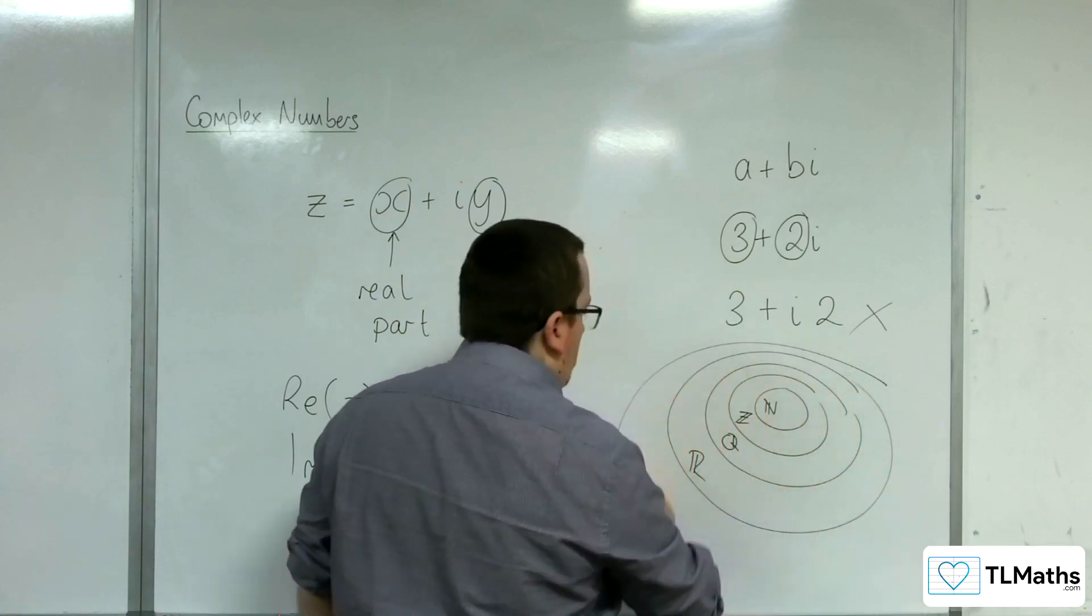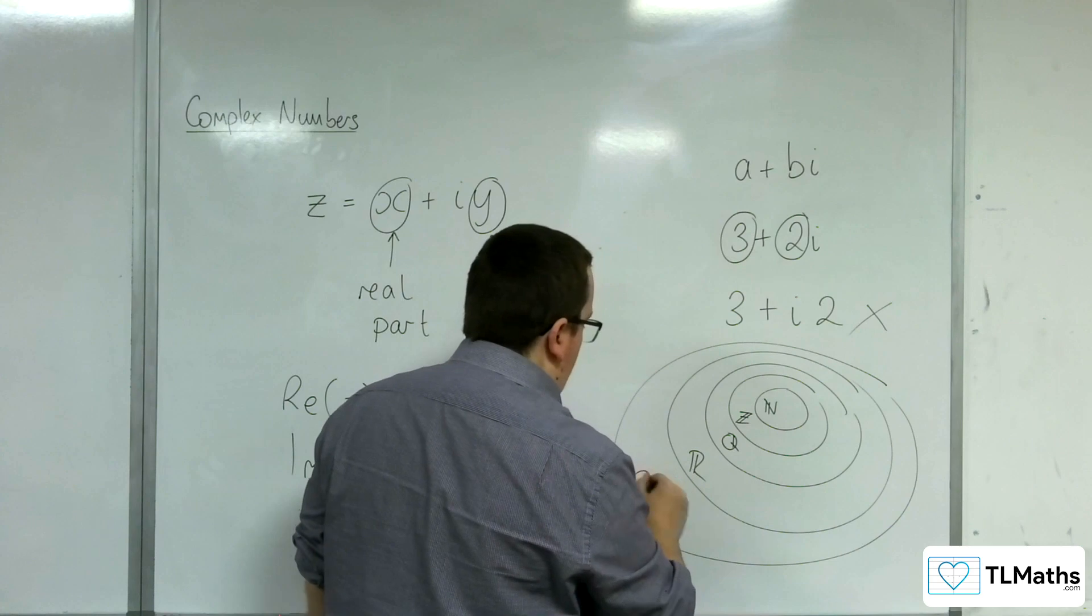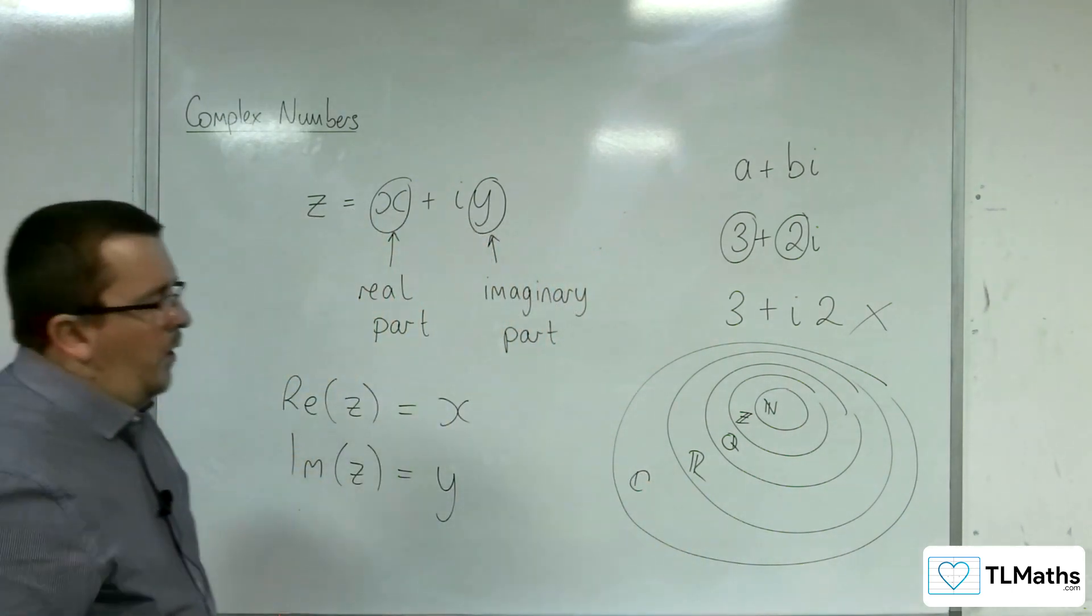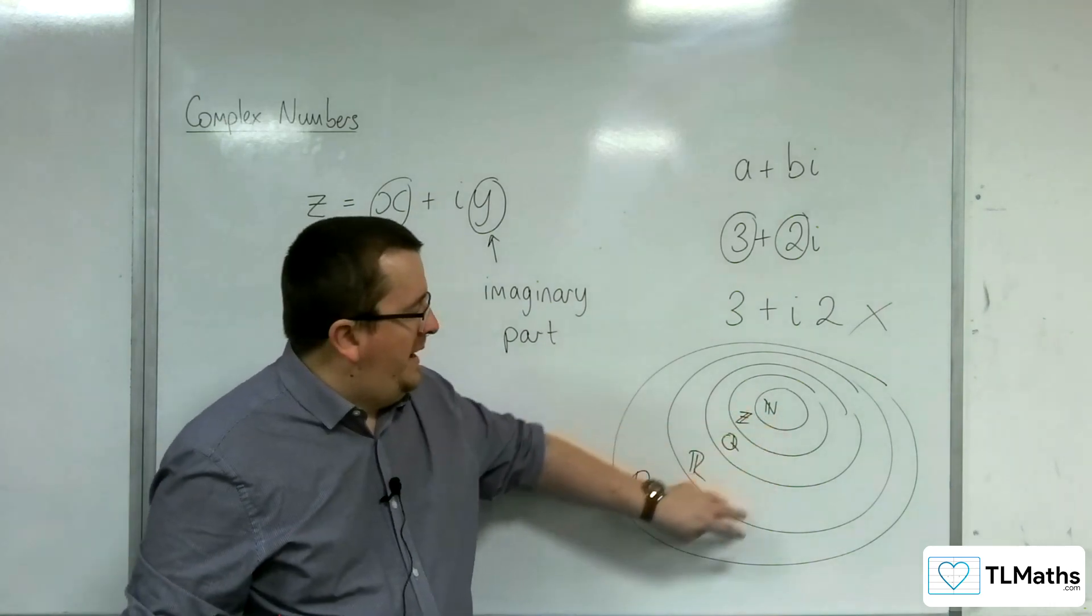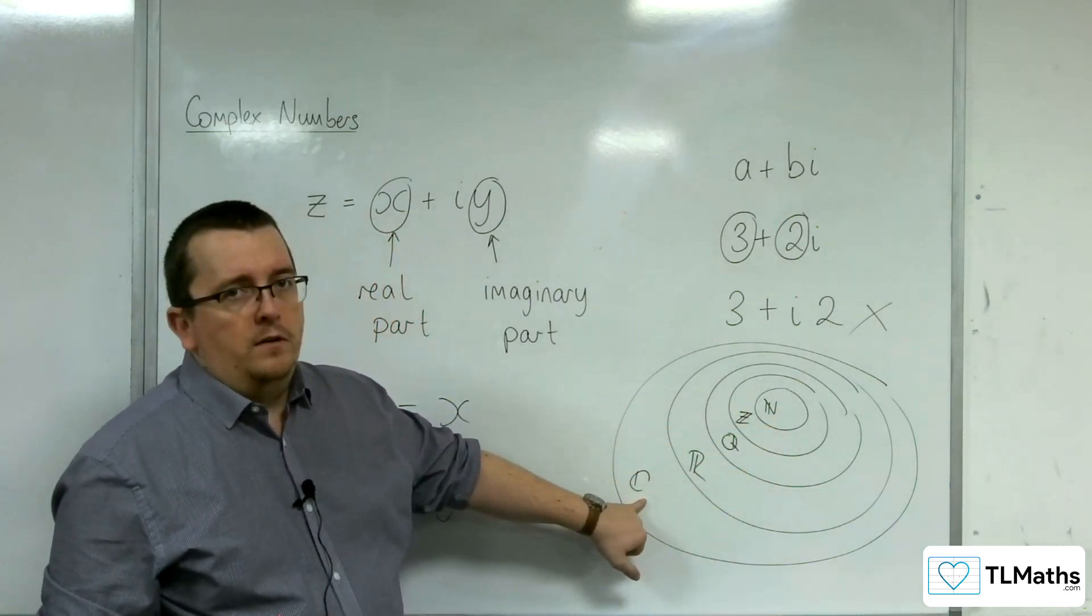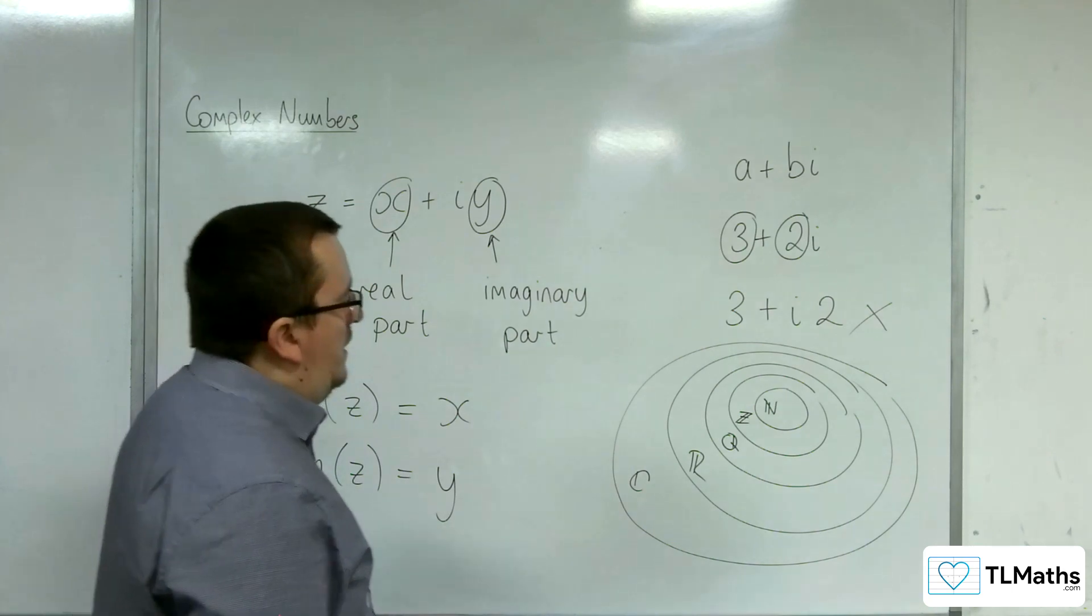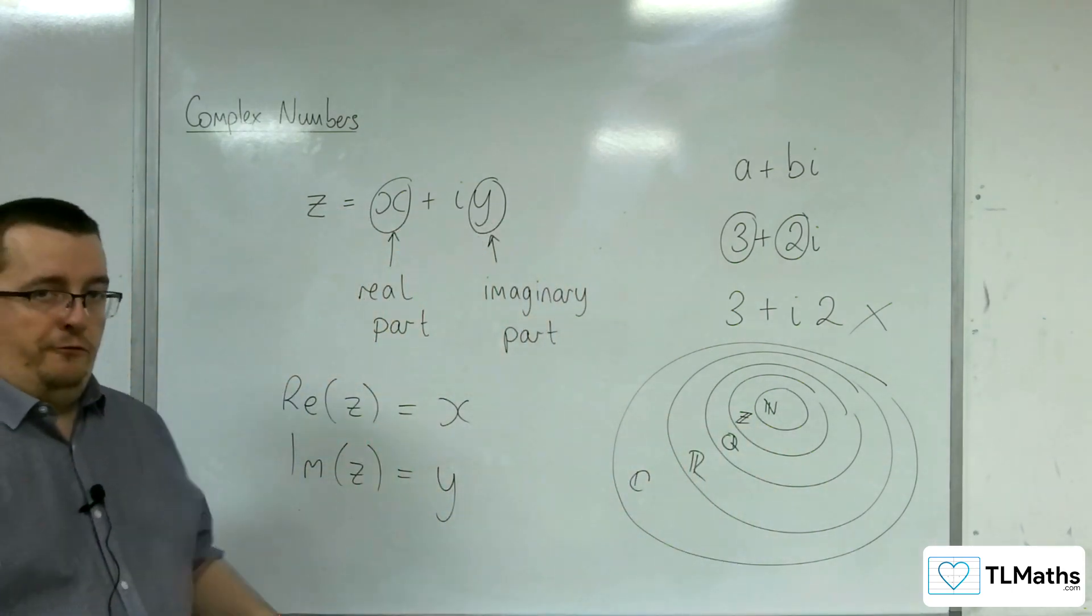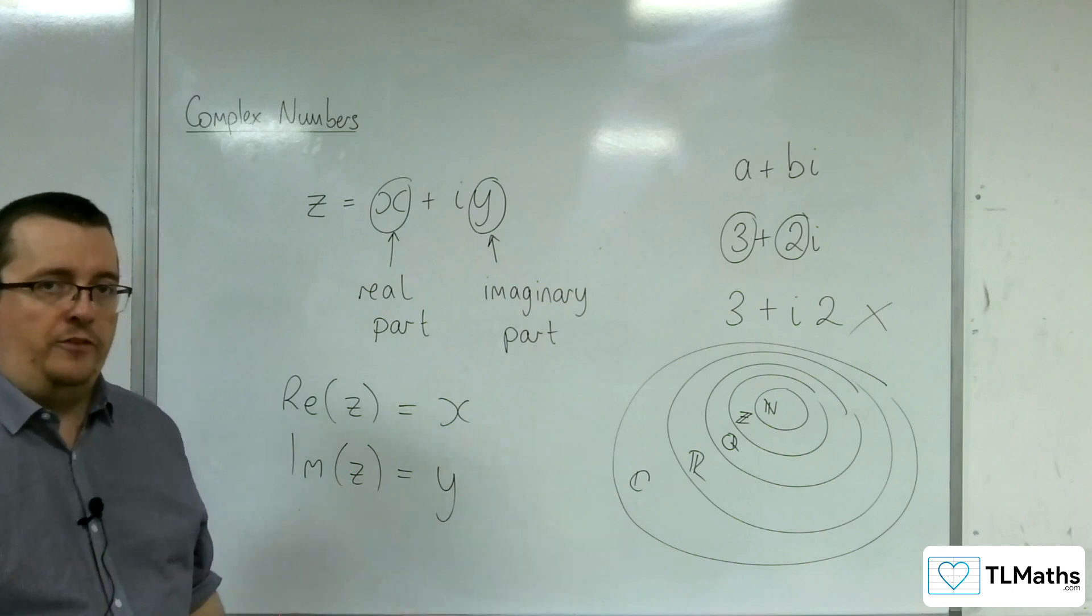Then we've got these real numbers. And then we have the complex numbers. And I was being asked, you know, how can these things be contained within the complex numbers?